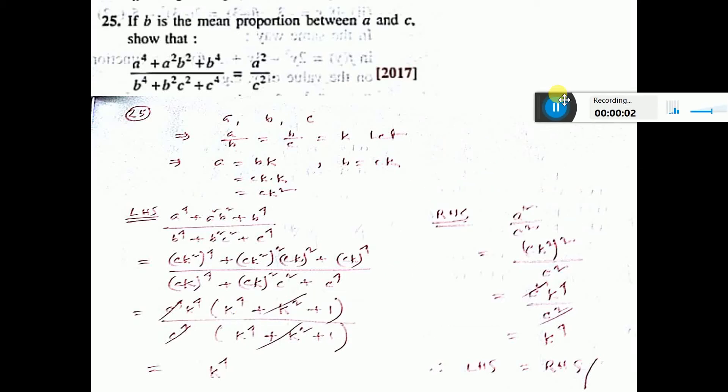It is given that B is the mean proportional between A and C. That is why A, B, C - B is written in the middle.